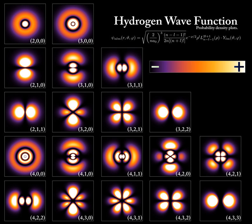Fundamentally, an atomic orbital is a one-electron wave function, even though most electrons do not exist in one-electron atoms, and so the one-electron view is an approximation. When thinking about orbitals, we are often given an orbital visualization heavily influenced by the Hartree-Fock approximation, which is one way to reduce the complexities of molecular orbital theory.